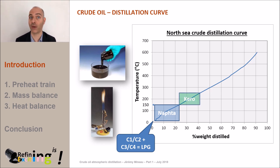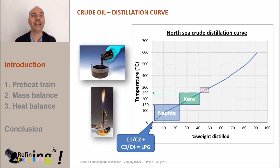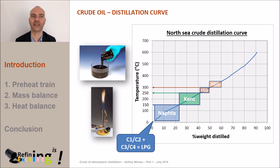Between 150 and 250 degrees C, we will vaporize the kerosene. Then, at a temperature between 250 and 300 degrees C, we will vaporize the light diesel cut. Then, between 300 and 350 degrees C, the heavy diesel cut.